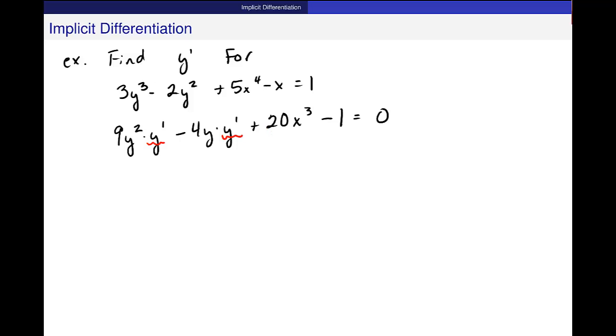So, the first thing that I'm going to do is move over the pieces that have nothing to do with y prime. So, I'll do that. 9y squared times y prime minus 4y times y prime equals negative 20x cubed plus 1.